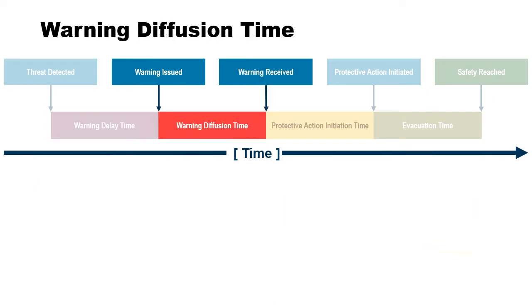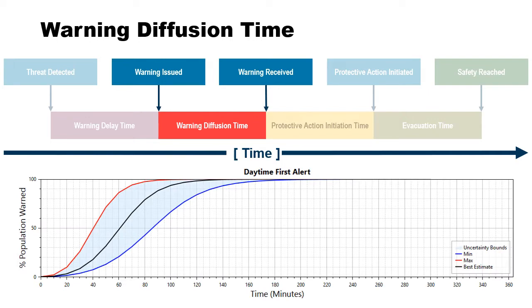Finally, warning issuance — once the emergency manager receives information that they need to evacuate, there's a time delay before they actually issue an evacuation order. That time delay can be very short or very long.